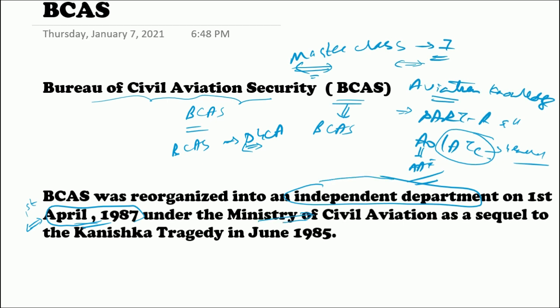This organization was formed because of one of the tragedies which happened in Indian aviation, known as the Kanishka tragedy, which occurred in the year 1985. After this incident, the Indian government decided that a separate agency related to security was needed, and so they organized a new organization: BCAS.